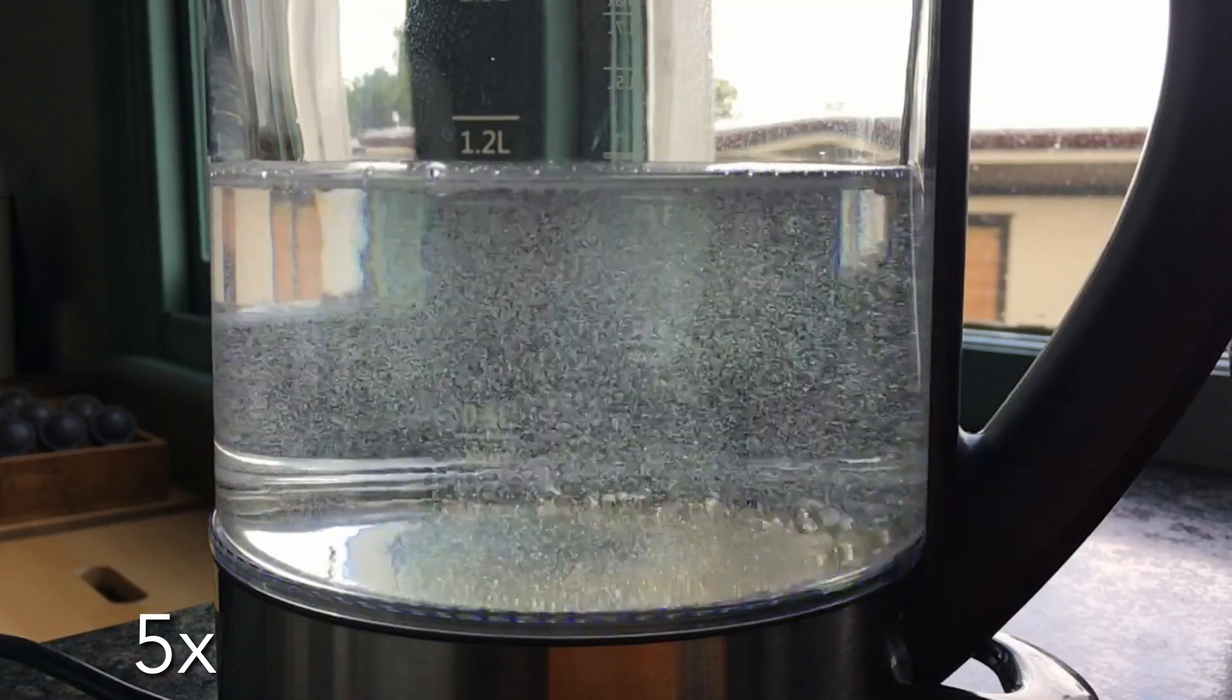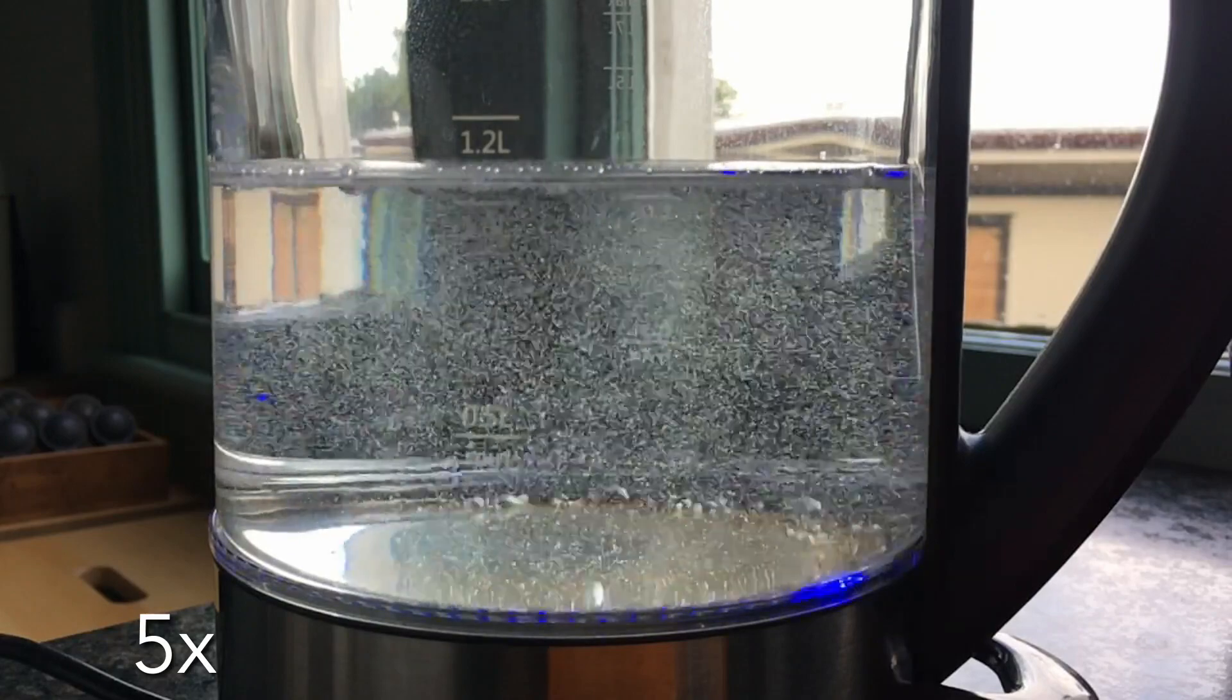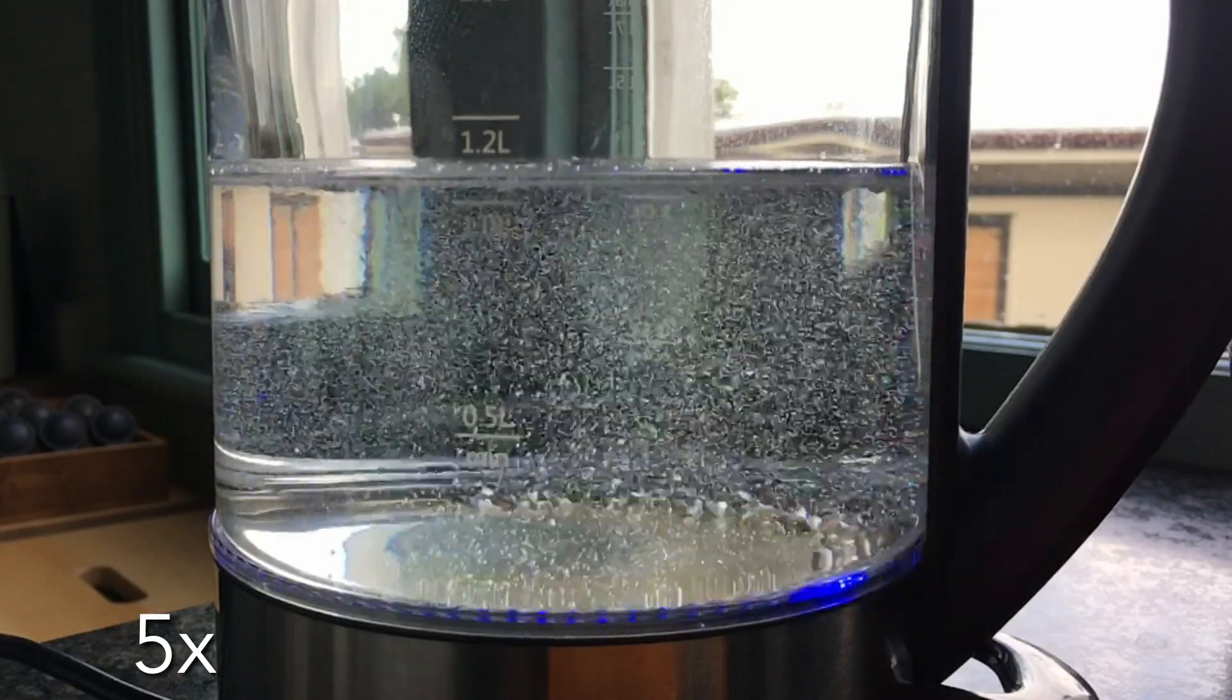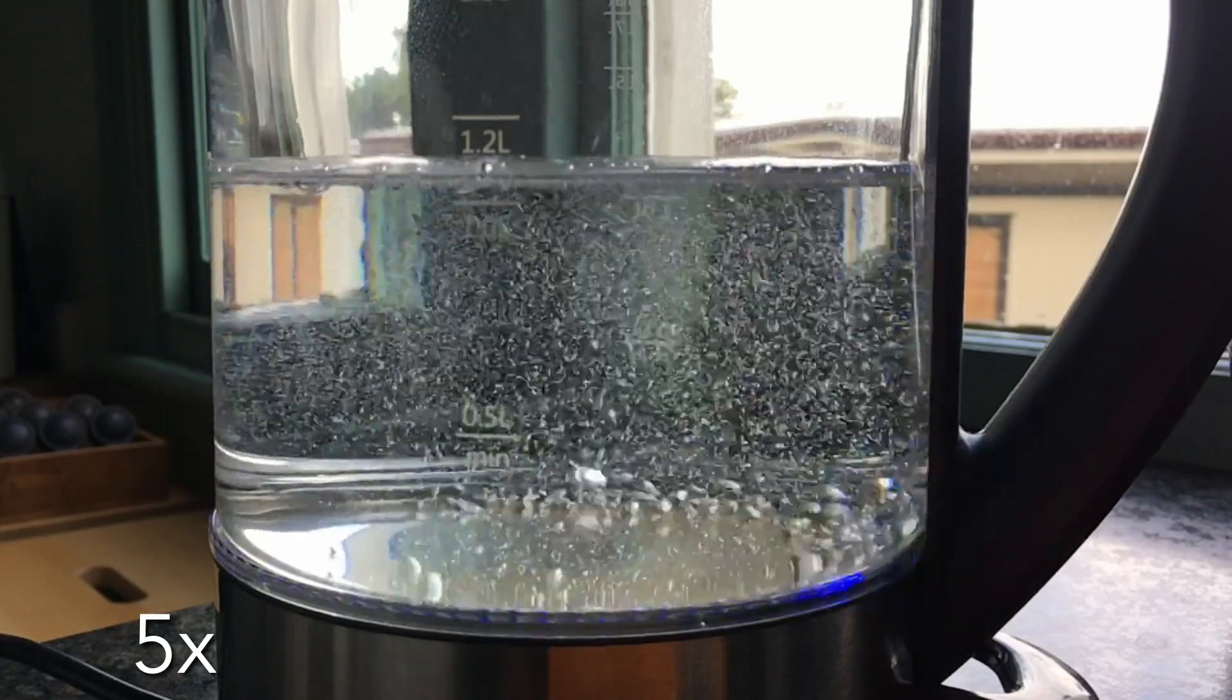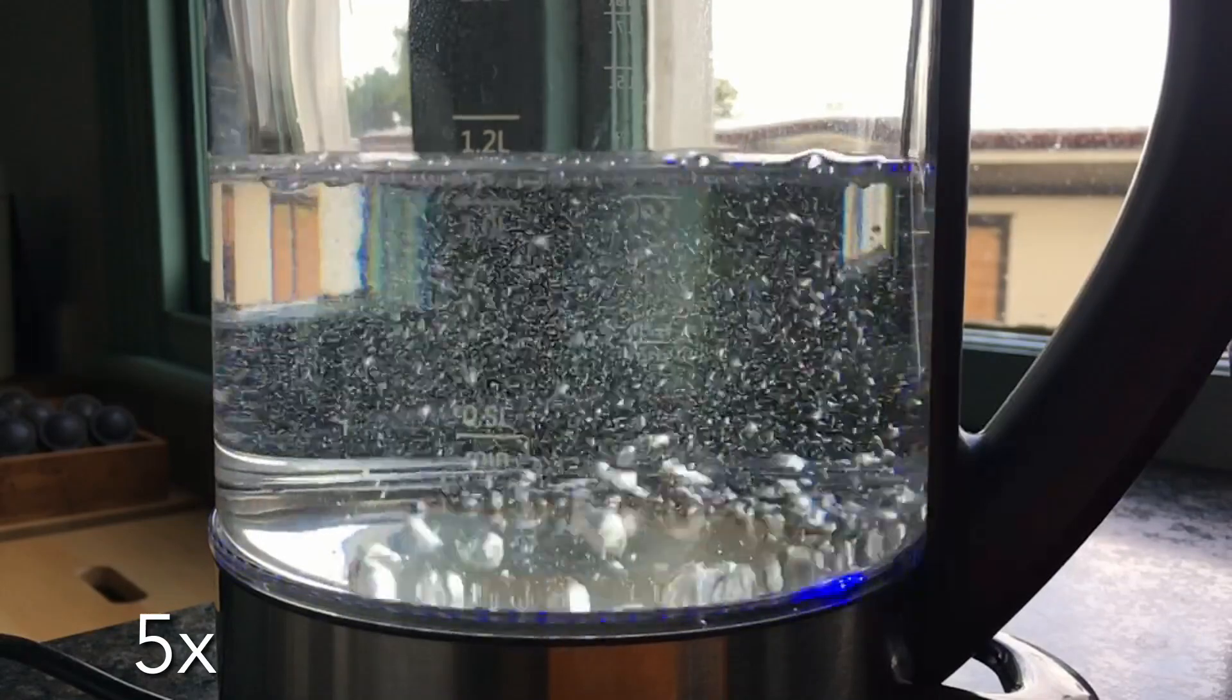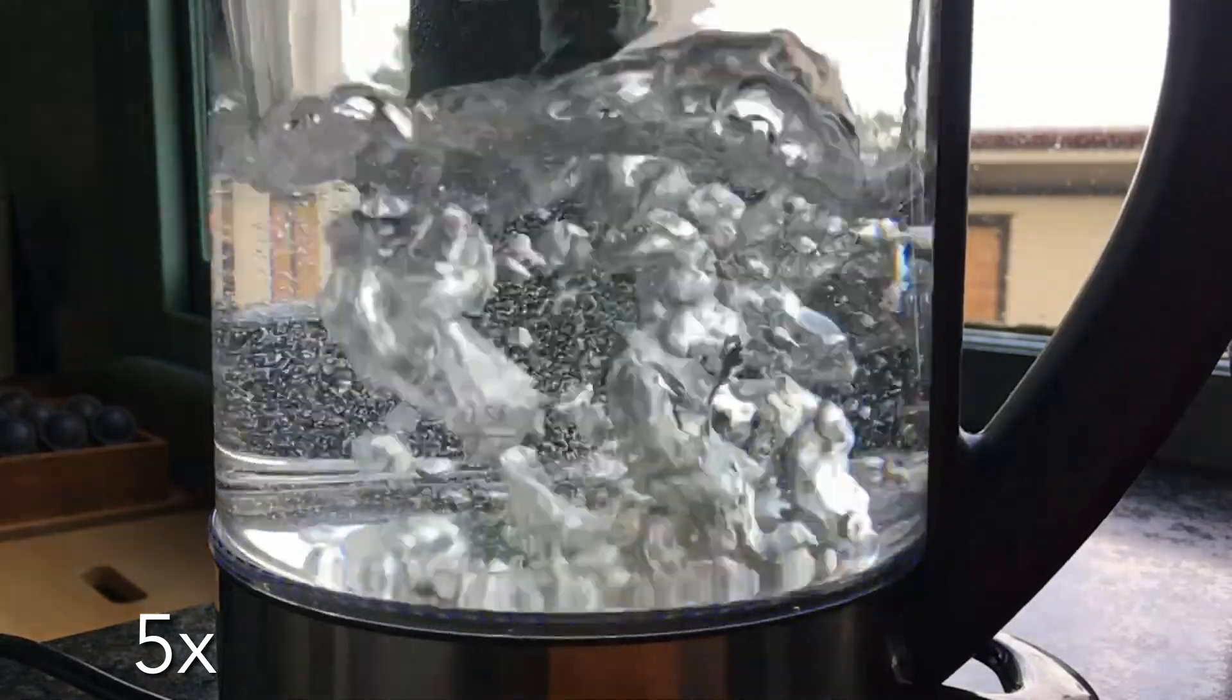The water in my tap was in contact with the air at some point, and some of the air dissolved into it. When you raise the temperature of the water, not all of the air can stay dissolved, and so it goes back into the gas phase, forming these tiny cloudy-looking bubbles.